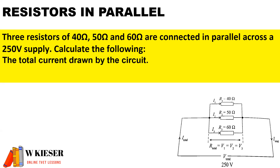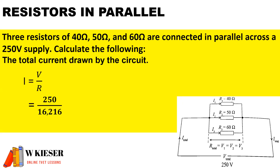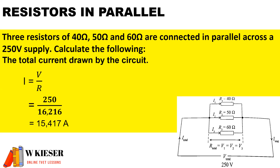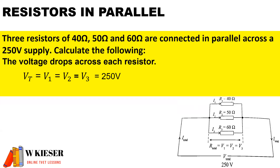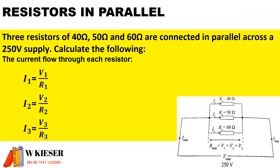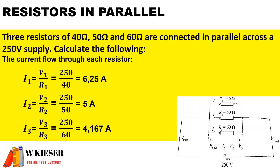The total current in the circuit using Ohm's Law is V total divided by R total, giving a total current of 15.417 amps. The voltage across a parallel circuit remains the same, so the volt drop across each resistor equals the supply voltage. To calculate the current through each branch, we use the same voltage divided by the value of each resistor.